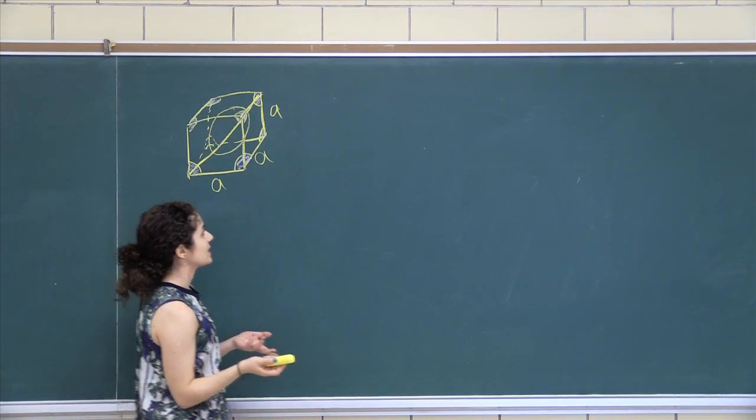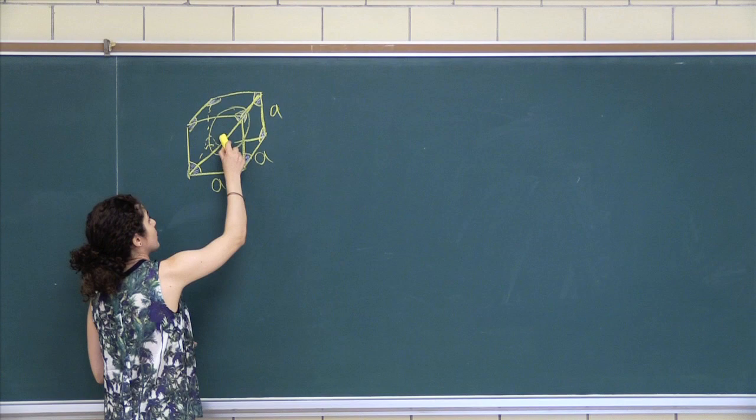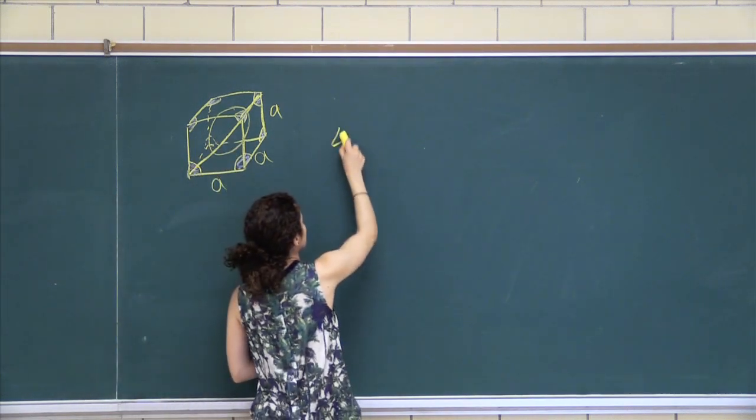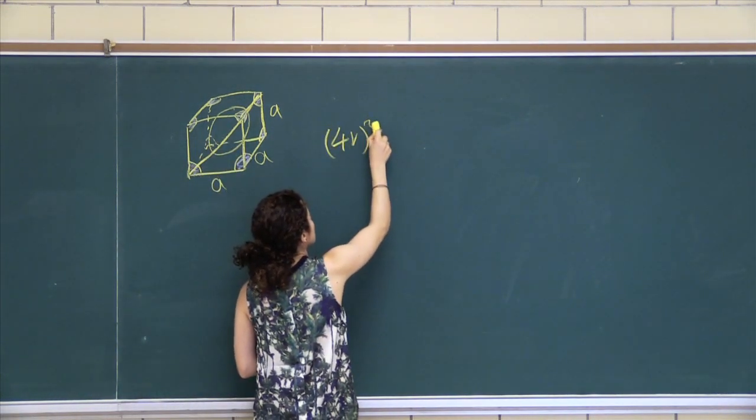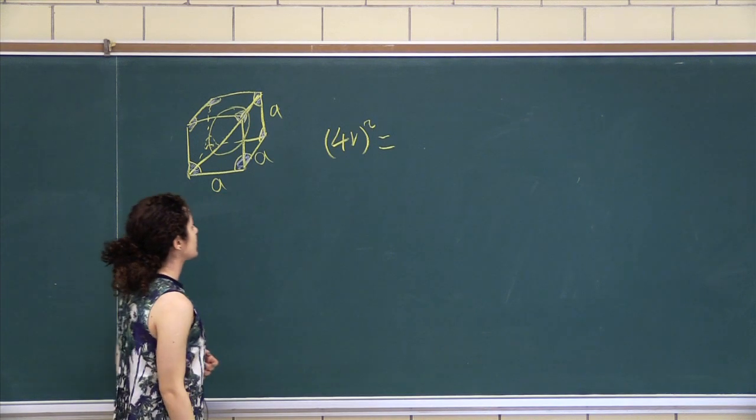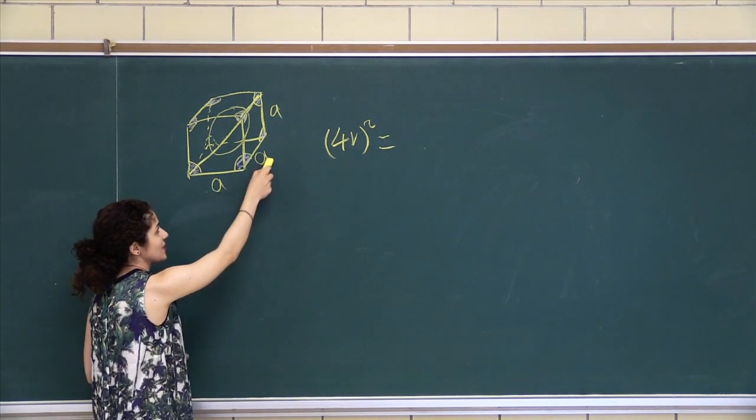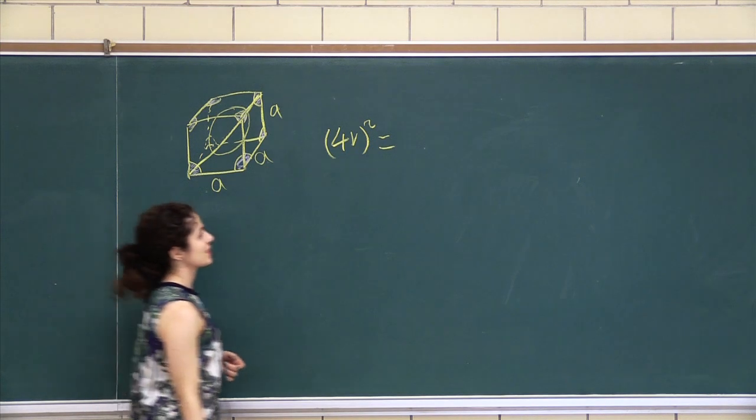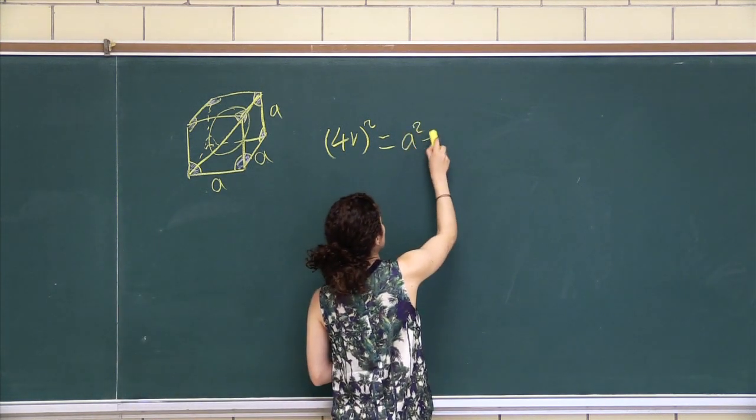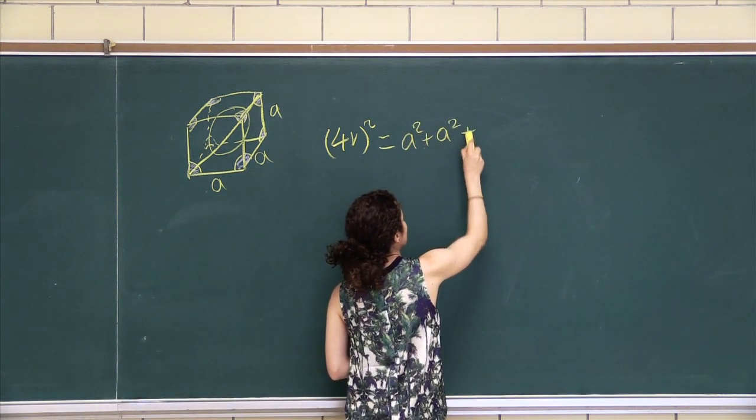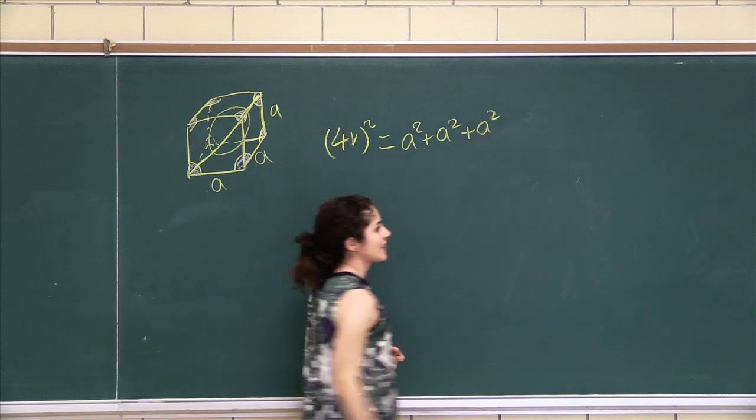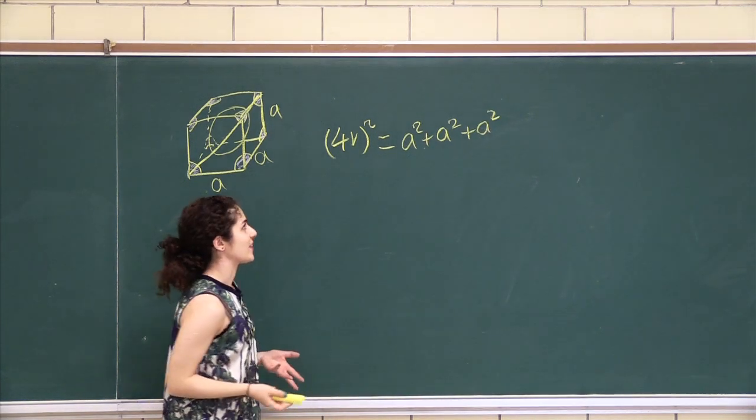So what you can say is that there's one, two, three, four Rs squared is equal to - we have one A squared, two A squared, three A squared. So A squared plus, this is kind of a 3D Pythagorean theorem.